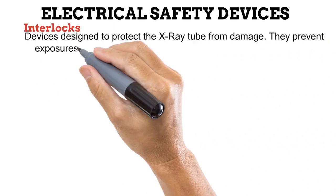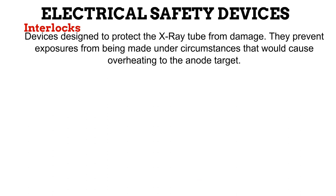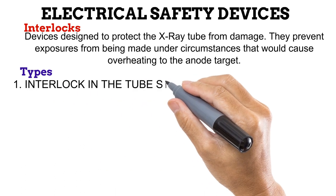We have looked at fuses, switches, and circuit breakers, which all help protect X-ray unit equipment from electrical damage. Even though these safety devices do a very good job, they do not do enough to protect the X-ray tube — and X-ray tubes are not cheap. This is where interlocks come in. They are designed to protect the X-ray tube from damage by preventing exposures from being made under circumstances that would cause overheating to the anode target. Three common interlocks connected to the X-ray tube are as follows.